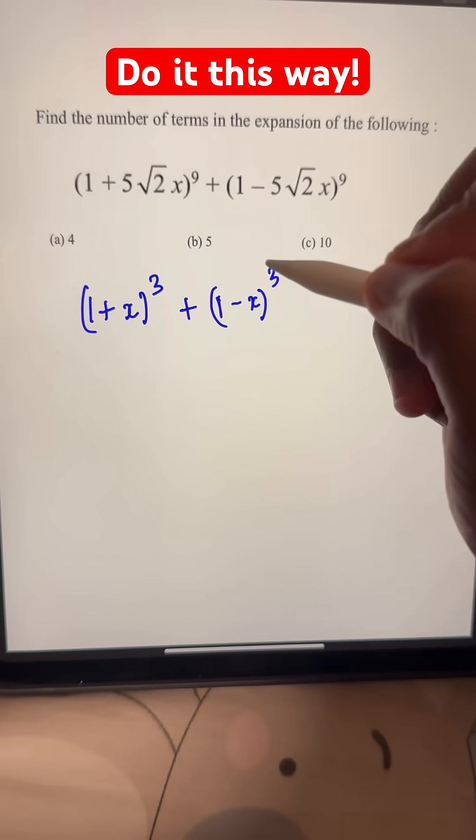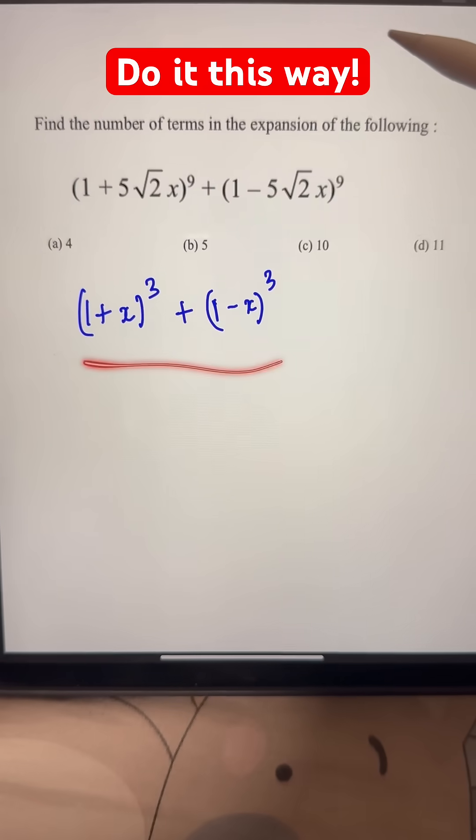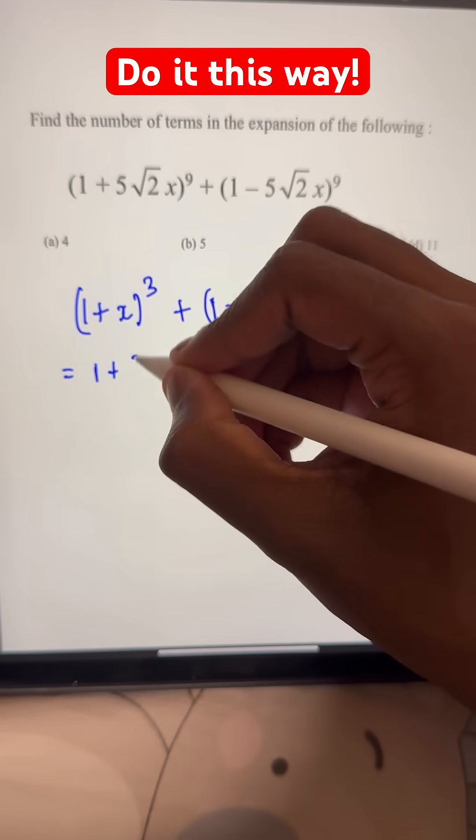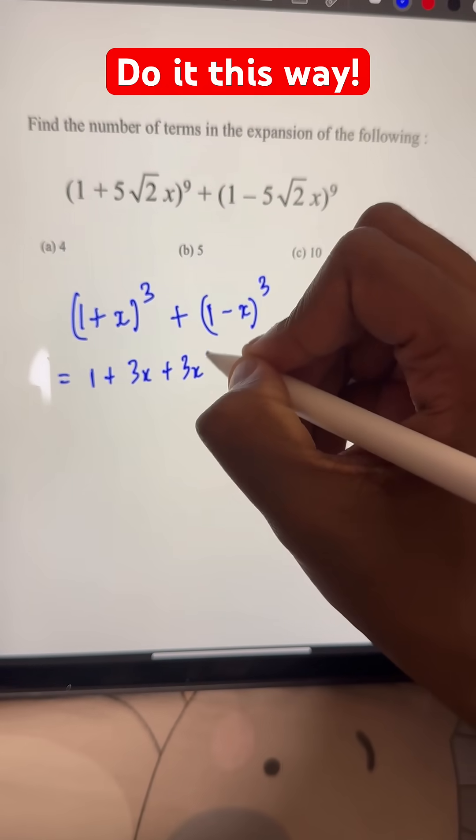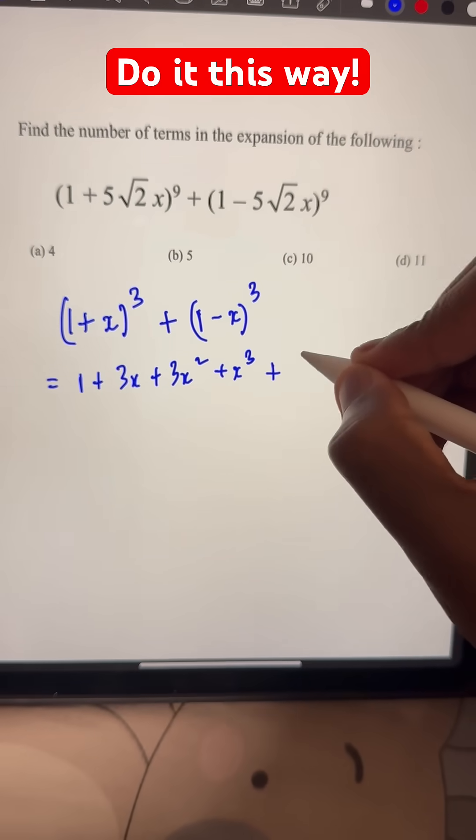For exponent 9, you can expand it but it'll take way too long. This one you can expand very easily. We'll get 1 + 3x + 3x² + x³.